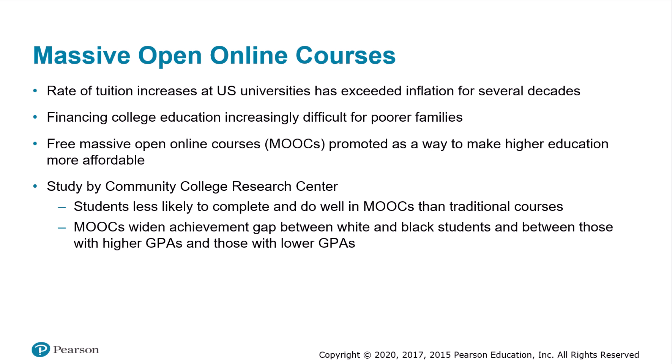For the past several decades, tuition increases at US universities and colleges have exceeded the inflation rate, making college increasingly difficult for students from poorer families to afford. An alternative called free massive open online courses, or MOOCs, has emerged and is promoted as a way to make higher education more affordable. In 2012, Colorado State University Global became the first US university to grant credit to students completing a MOOC in computer science, and other universities are likely to follow.